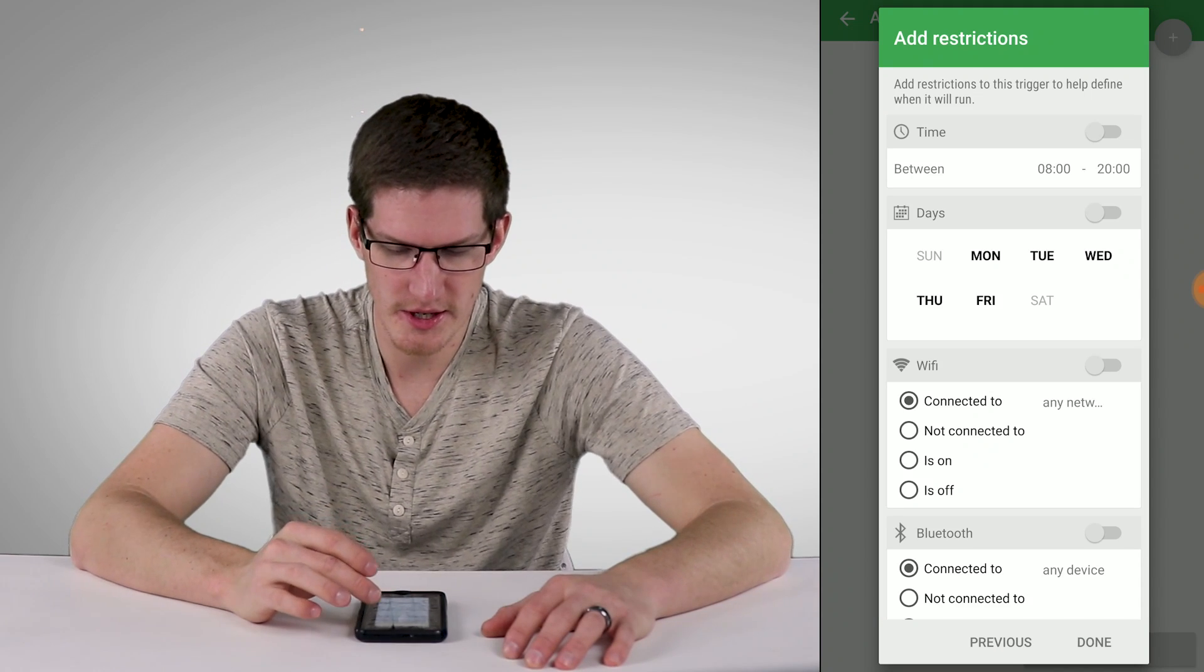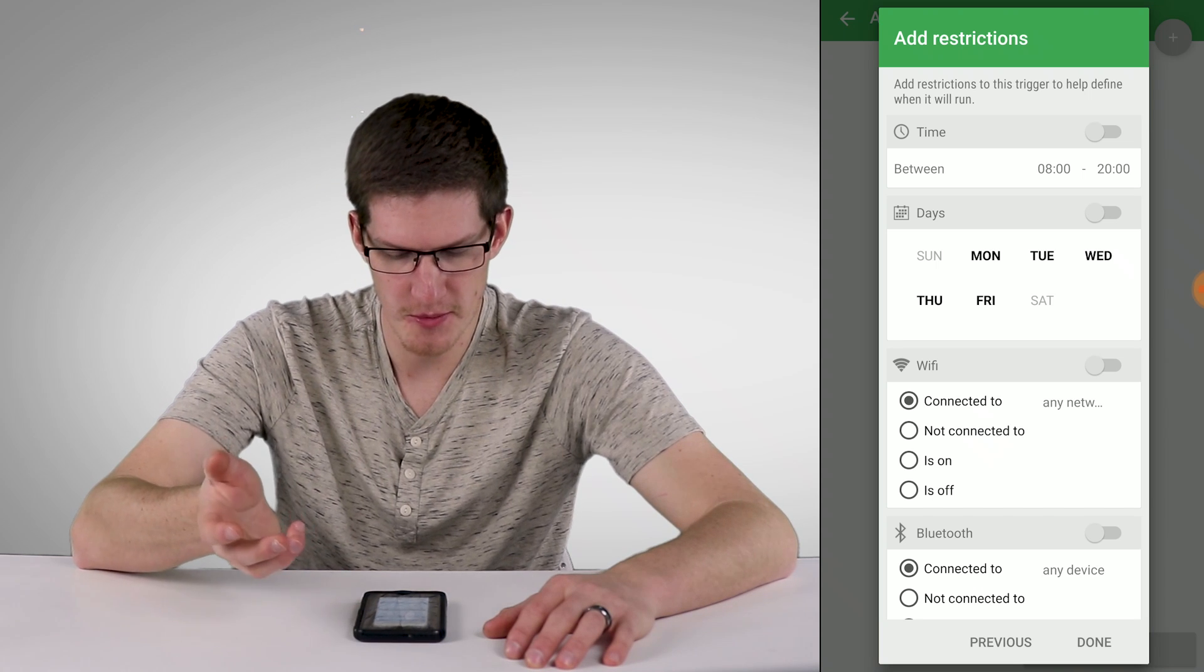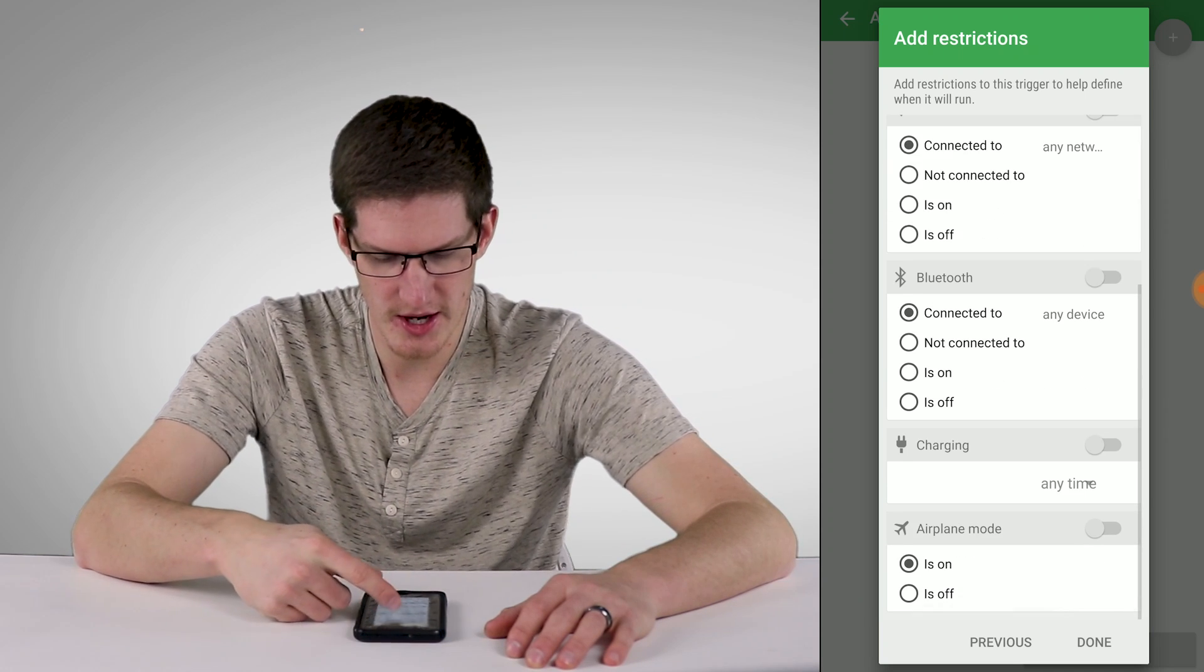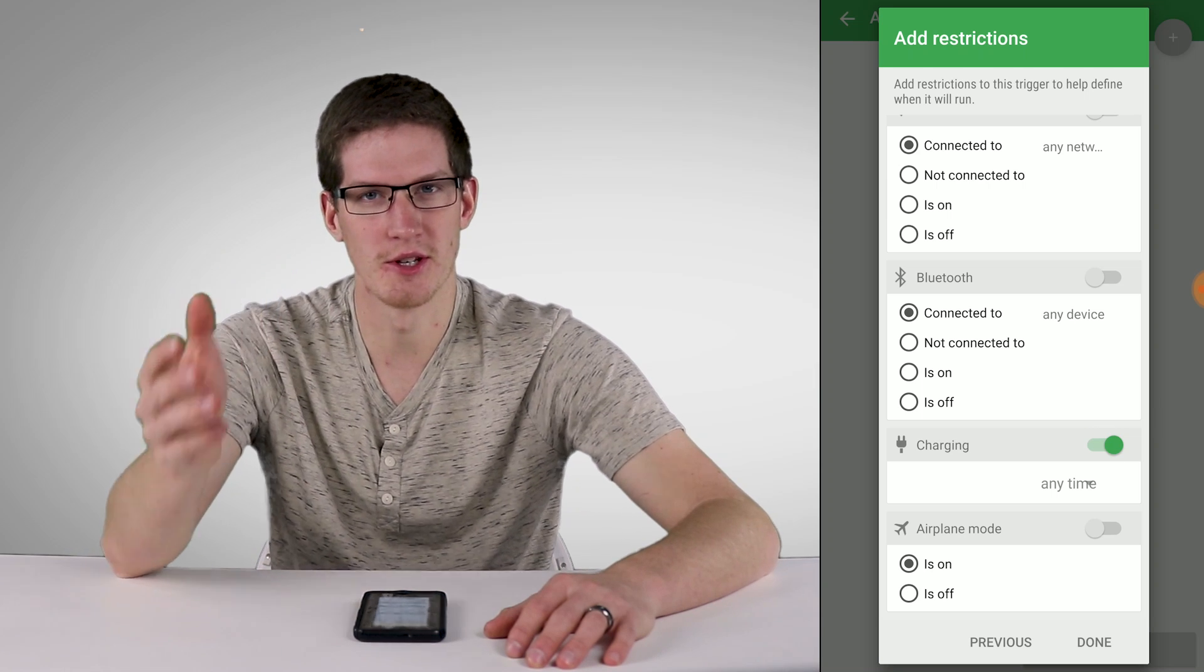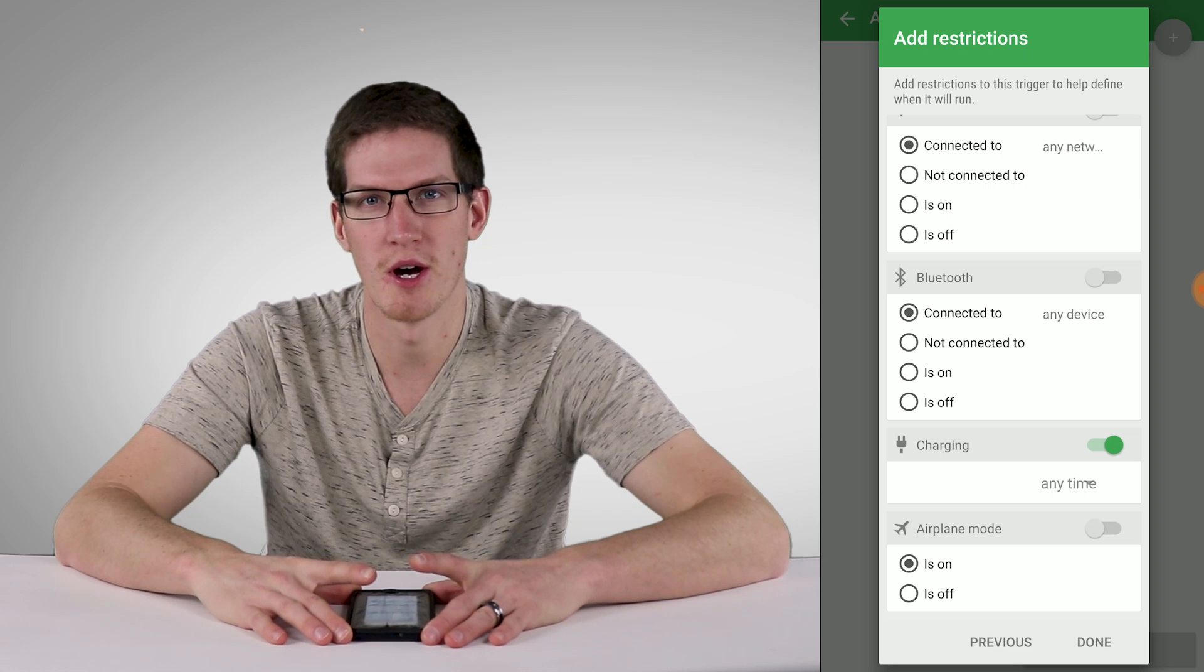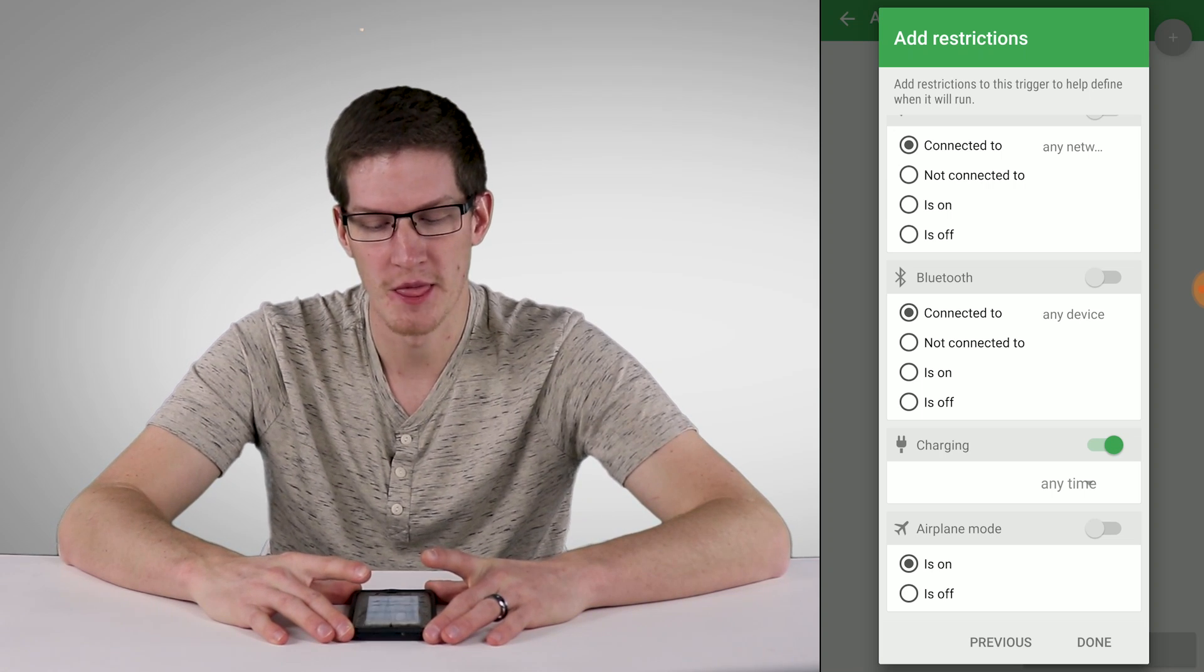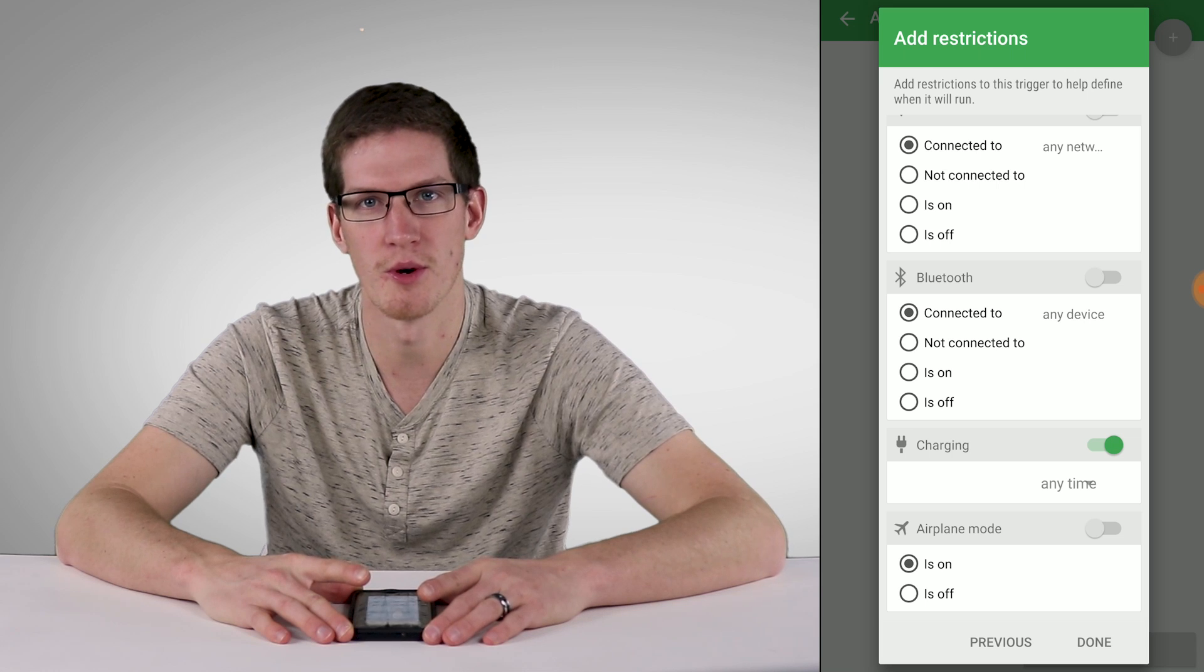So here what we're able to do is actually add a restriction. So this will be different for every person. But the best restriction that I found to add in this case is charging. And if you haven't picked up on it yet, what we're going to be doing is actually setting this up so that when I set my phone down on my bedside table, it will go ahead and run that Good Night Routine so I don't have to execute it in a different way.